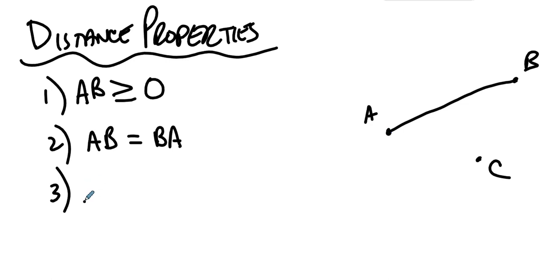And then third, the distance from A to B plus the distance from B to C has to be at least as big as the distance from A to C. A to B plus B to C has to be at least as big as the distance from A to C. When would they be the same?